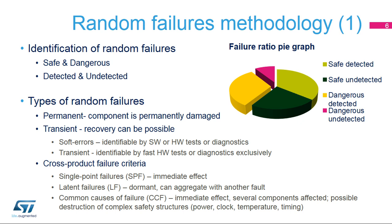For quantification purposes, safety standards recognize a safe failure fraction and diagnostic coverage. The safe failure fraction, or SFF, is the ratio of the rate of safe failures, including the rate of detected dangerous failures, to the total failure rate — safe failures as well as detected and undetected dangerous failures. The diagnostic coverage, or DC, is the ratio of the probability of detected dangerous failures to the probability of all dangerous failures.